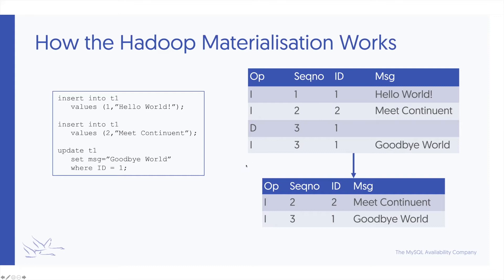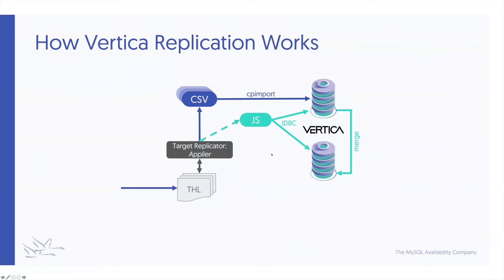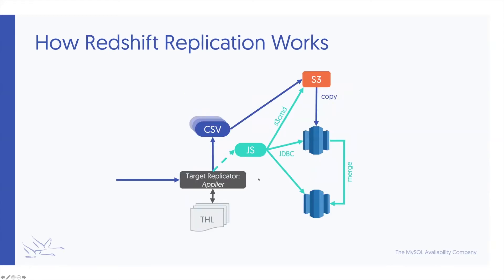With Redshift and Vertica the merge is slightly different and we use staging tables. For Vertica, the applier writes out to CSV, which is then imported using the CP import into the Vertica staging area, and we merge using JDBC calls. With Redshift it's pretty much the same but slightly different — CSV files get loaded into an S3 bucket using the S3 CMD, S4 CMD, or AWS CLI tool, and then JDBC calls load that into Redshift from the CSV files in S3.